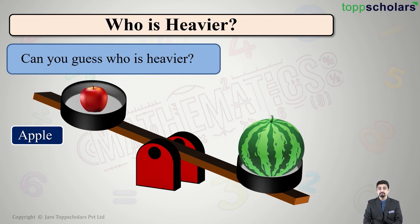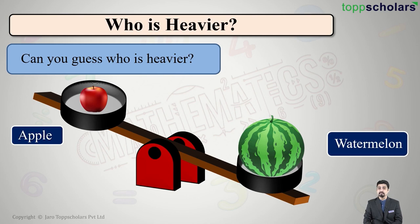In the other pan we have a watermelon. The pans have been kept on, or attached to, a seesaw. Now tell me students — which pan has gone down? The watermelon's pan has gone down.